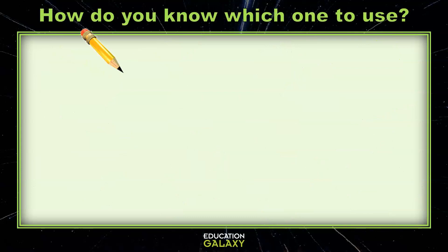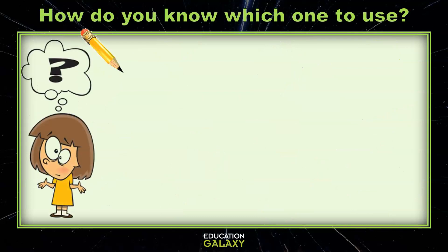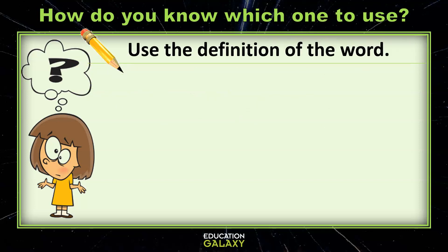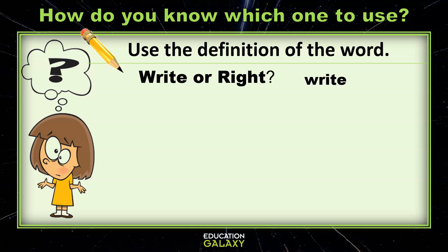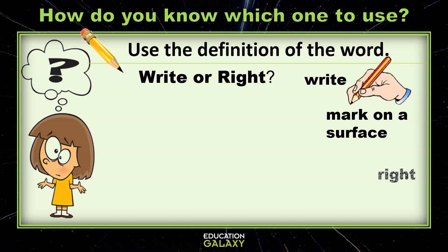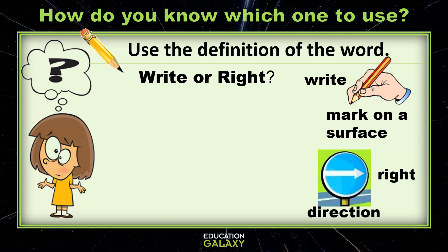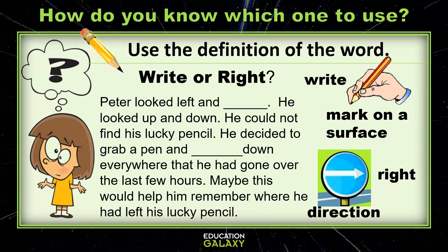So how do you know which homophone to use? You're going to have to use the definition of the word. Let's try some together. What about 'right' or 'write'? Think about the different meanings. W-R-I-T-E means to mark on a surface, like you write something down. R-I-G-H-T is a direction, like left and right. Now let's read our paragraph — look for clues to help you decide which 'right' goes in the blank.